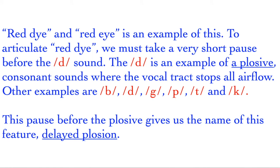Delayed plosion. 'Red dye' and 'red eye' is an example of this. To articulate 'red dye', we must take a very short pause before the /d/ sound. The /d/ is an example of a plosive consonant sound where the vocal tract stops all airflow. Other examples are /b/, /d/, /g/, /p/, /t/ and /k/. This pause before the plosive gives us the name of this feature, delayed plosion.